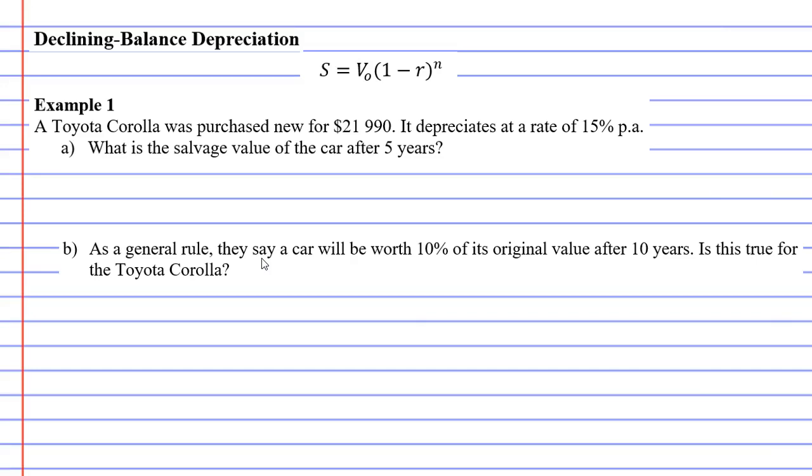In this example, we have purchased a Toyota Corolla new for $21,990. That's our purchase price, so V0 equals $21,990. It then says that it depreciates at a rate of 15% per annum. So we'll write that as our interest rate, 15%. Remembering that we have to write our interest rate as a decimal, which means dividing it by 100. This gives us 0.15.